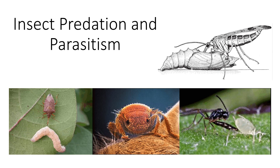Some estimate that 25 percent of insect species are predatory or parasitic in some life stage, although nearly every order has predators. The immature and adults of orders of Odonata, Mantodea, and Neuroptera, and the adults of Mecoptera, are almost exclusively predatory. Many of the Hymenoptera are parasitoids.